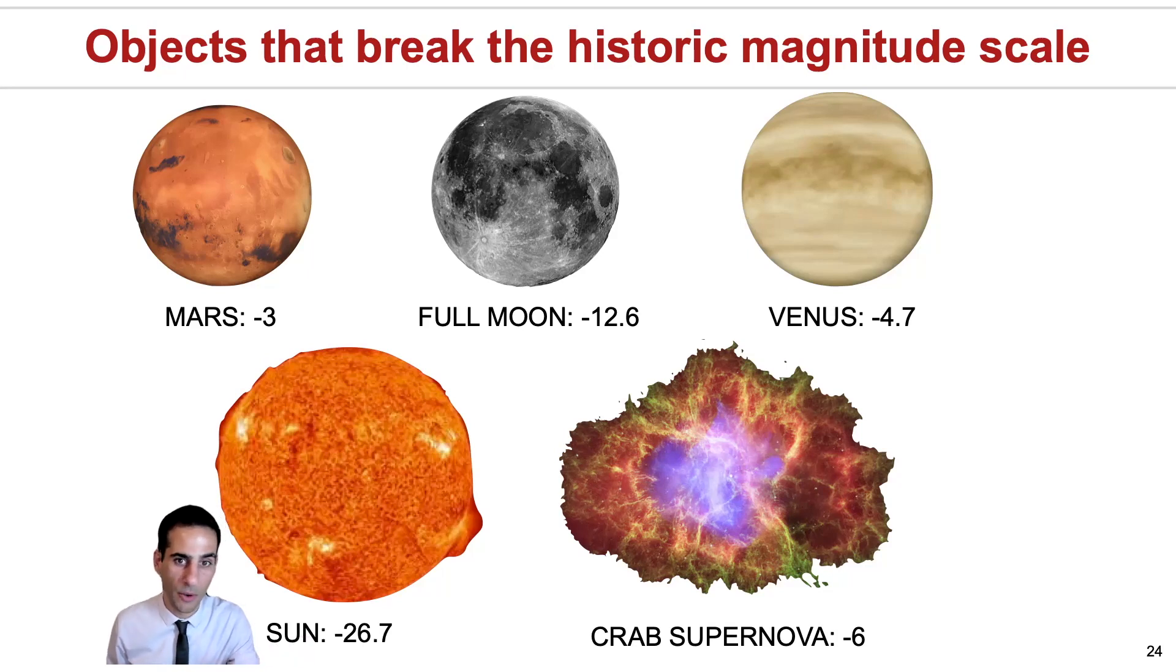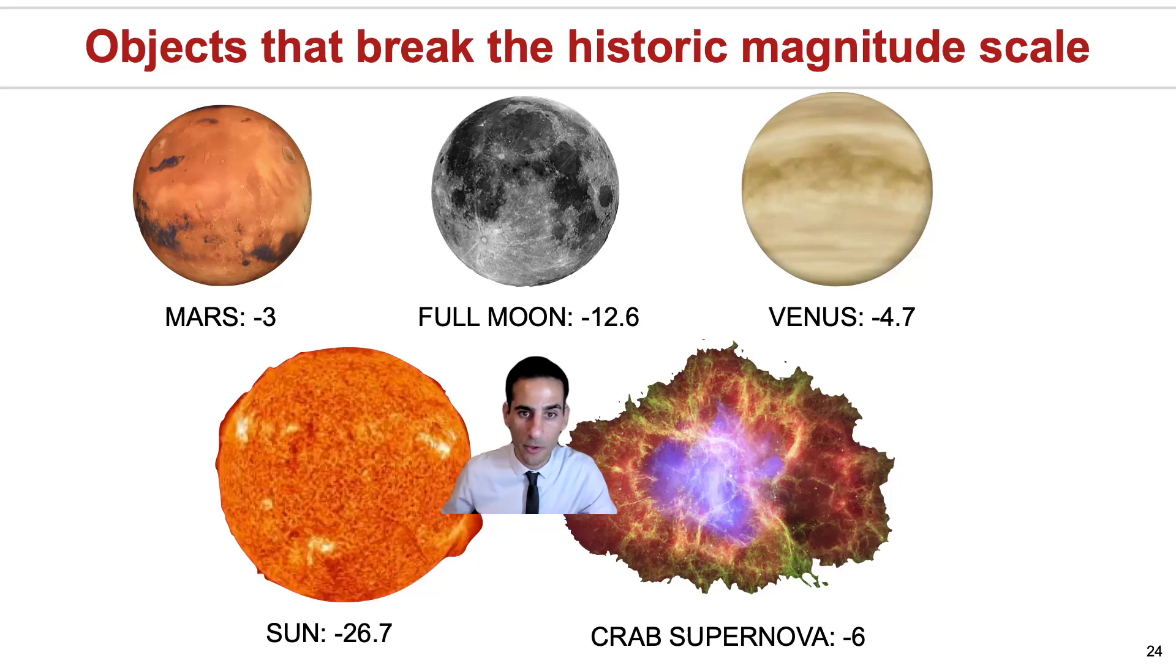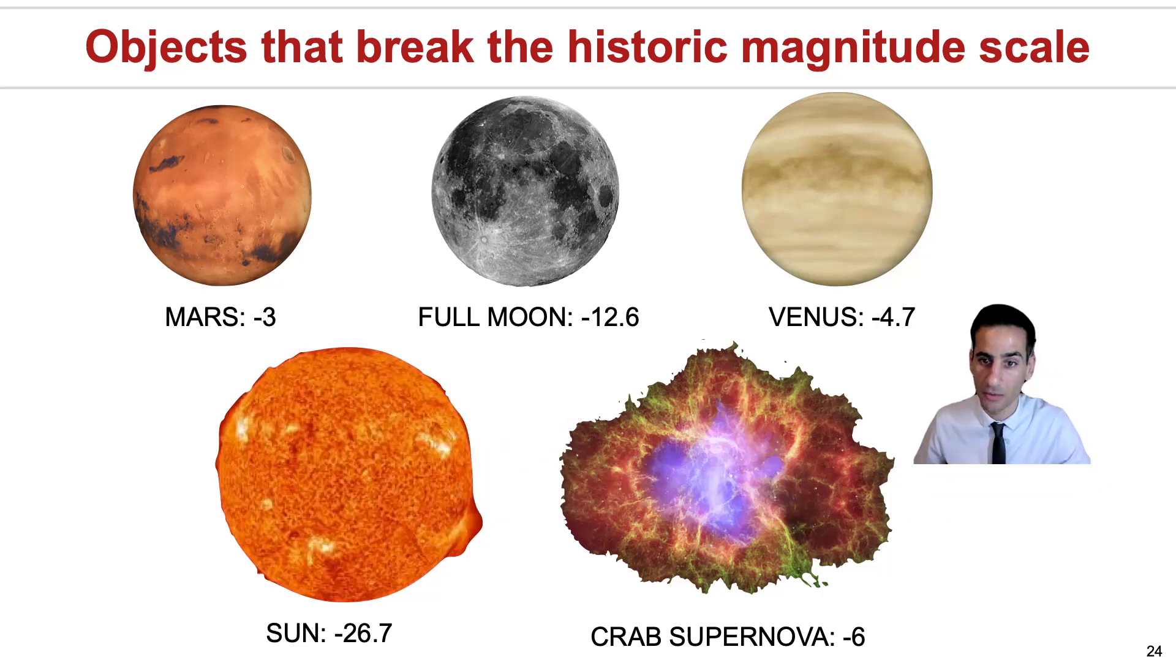But other objects such as planets—Mars will change its magnitude because it depends on the distance. The moon also, because it depends on the phase, but it's typically for a full moon something like minus 13 almost. Venus is also quite bright, but also nebulae on the sky that can be very bright.